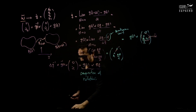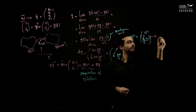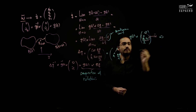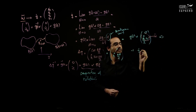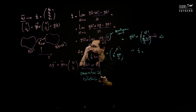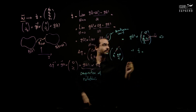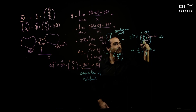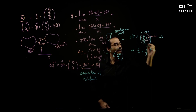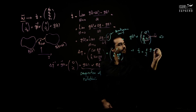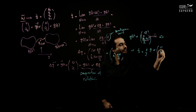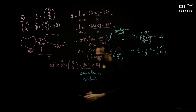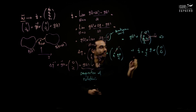Putting it all together, we arrive at the final formula: q-dot equals one half times q multiplied by omega, where omega is the angular velocity expressed as a pure quaternion. This is the key kinematic relation between the quaternion time derivative and angular velocity.